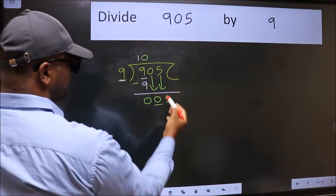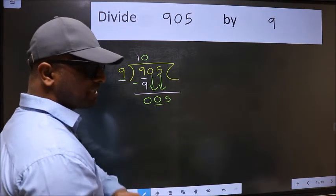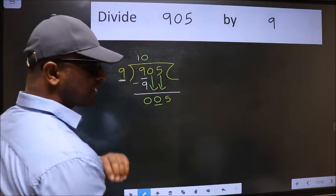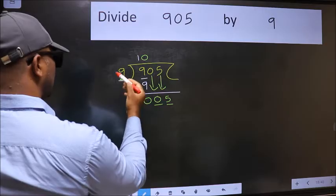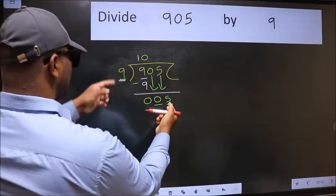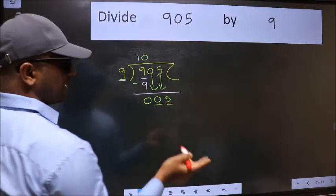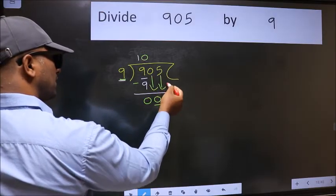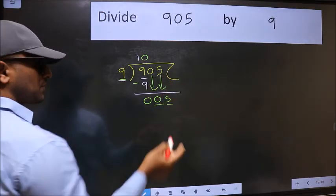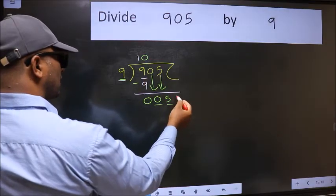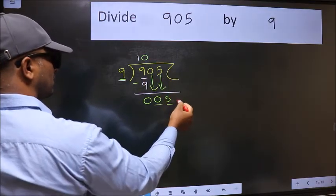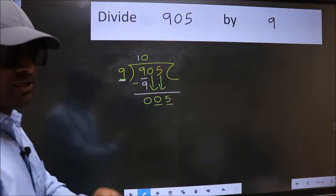After this step, the mistake happens. And the mistake is this: Here we have 5 and here 9. 5 is smaller than 9, and we don't have any more numbers to bring it down. So what many do is they directly put dot, take 0, which is wrong.